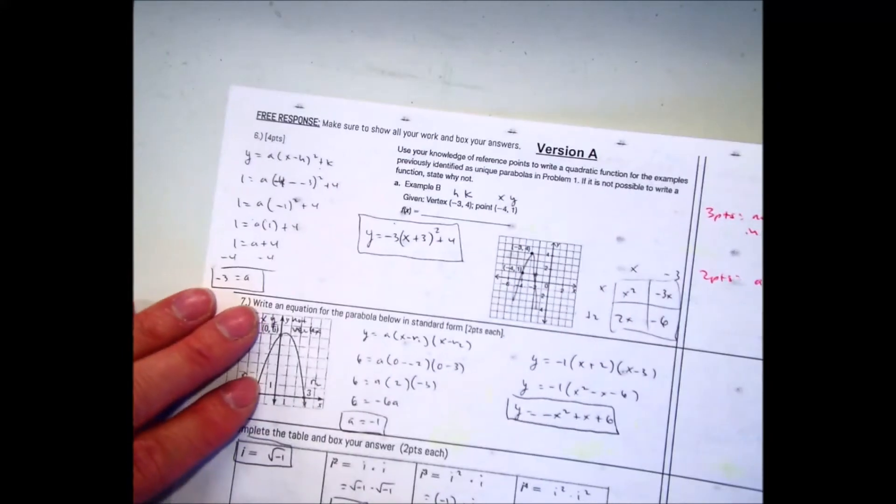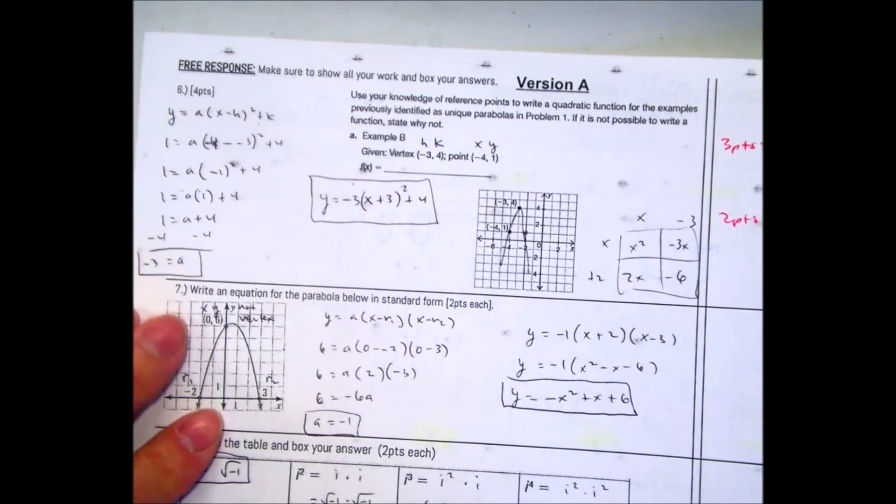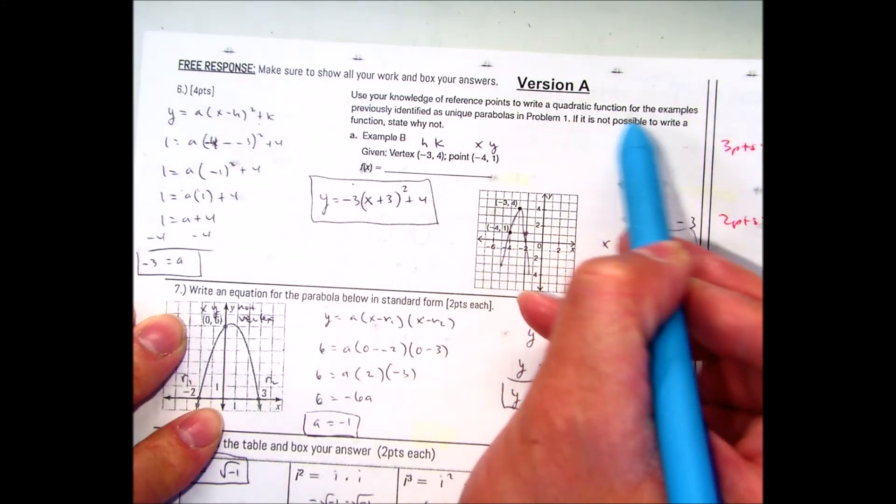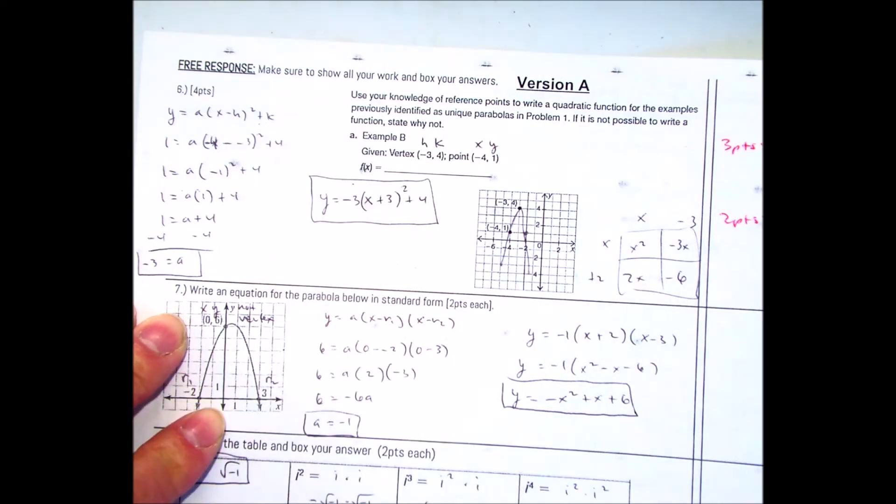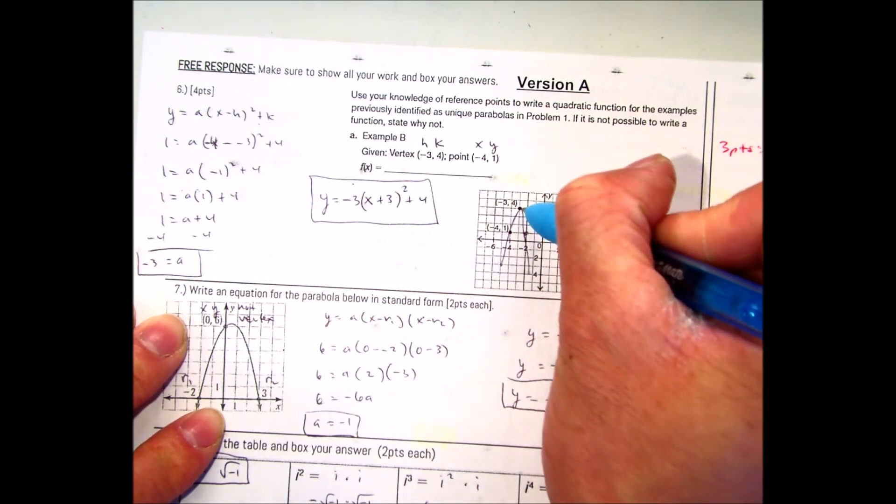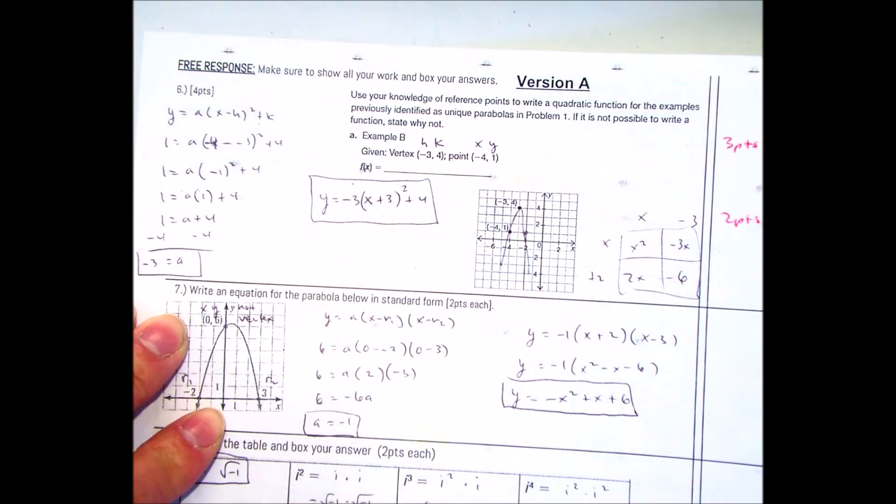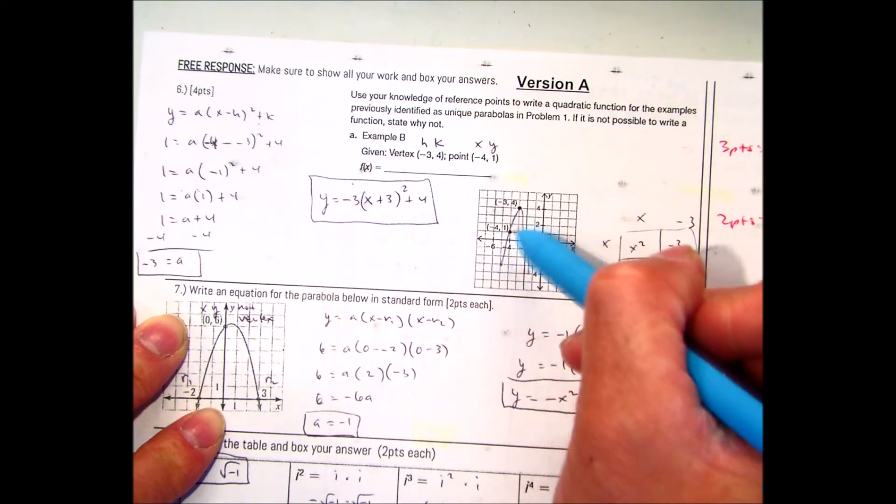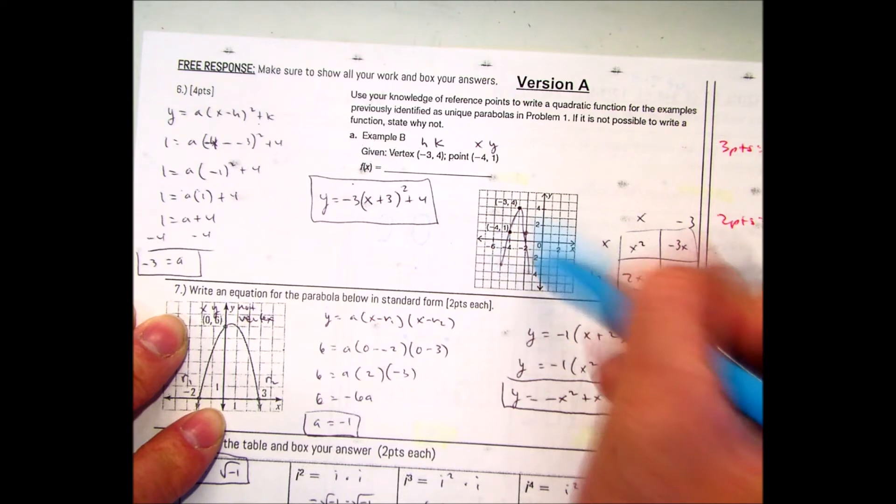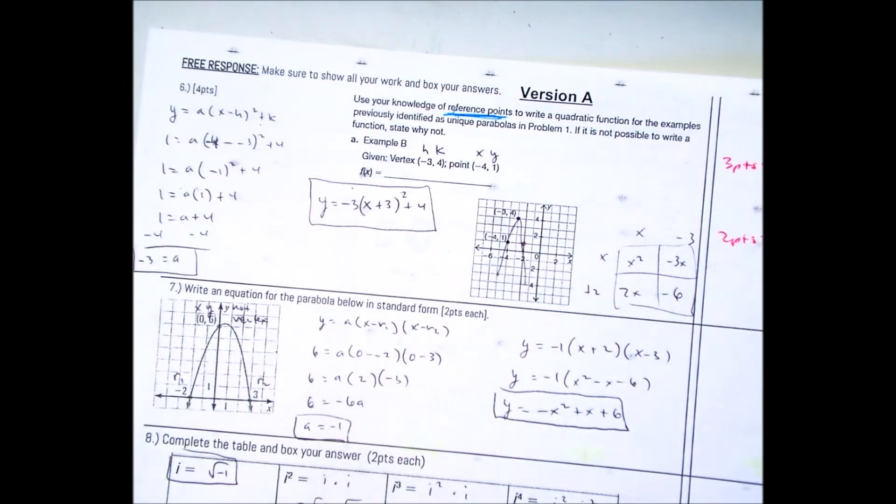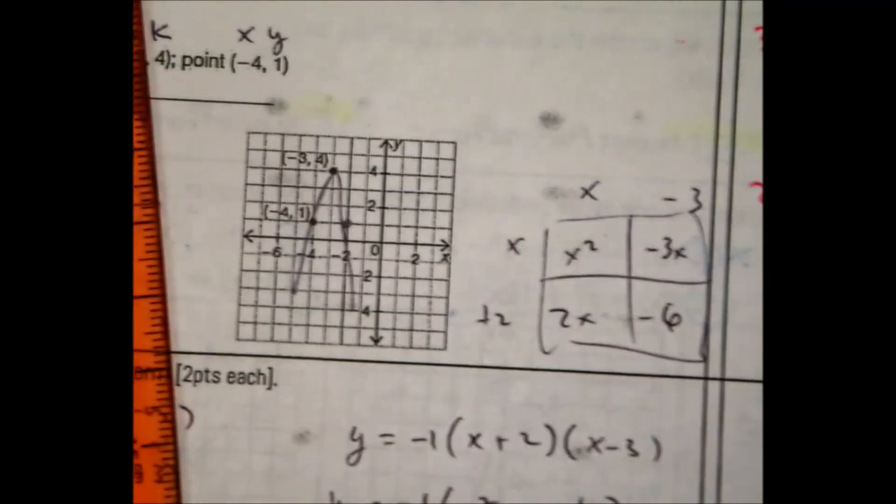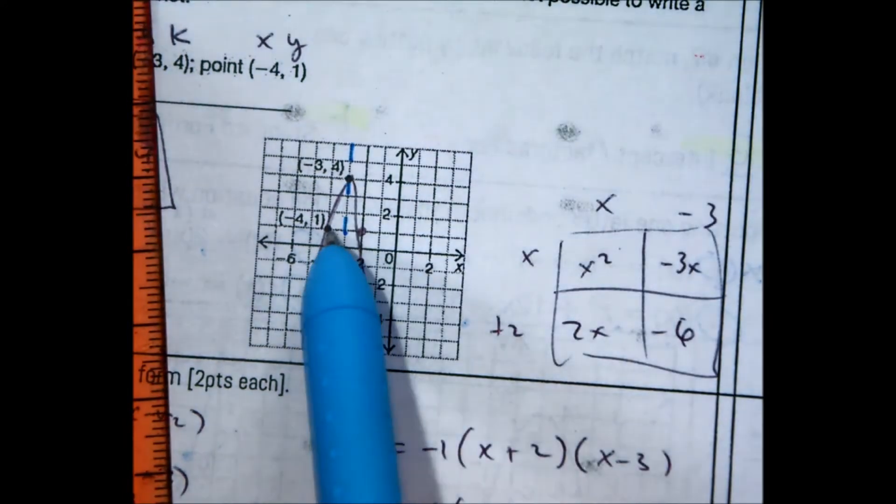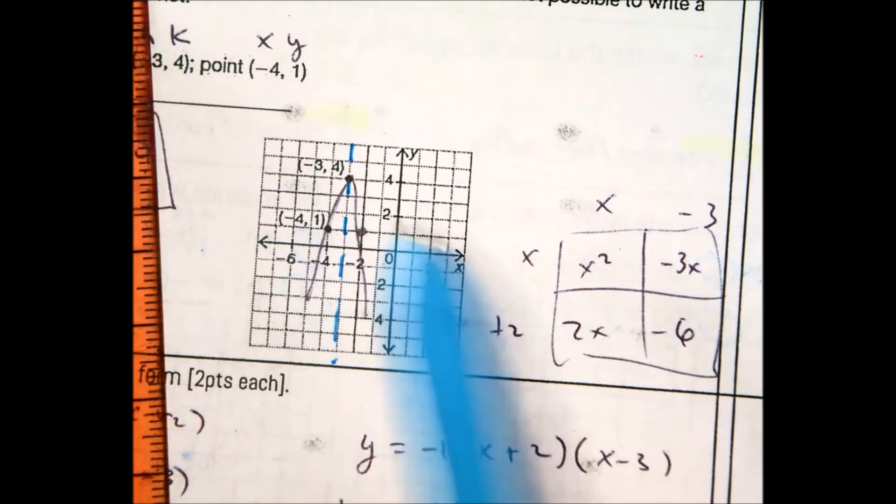Back side. Free response. Use your knowledge of reference points to write a quadratic equation for the examples. Previously identified as unique parabolas in problem 1. If it is possible, write a function state why or why not. Remember, I took this one directly from your packet. They gave me this point, negative 3, 4, and it tells me it's the vertex. So I know it's going to be either the highest or lowest point. Now I have a point, negative 4, 1, that's actually below the vertex, so I know it's going to open down. When I said use reference points, all I had to do was identify the axis of symmetry. And if I have this point here, negative 4, 1, it's one unit away from the axis of symmetry. I just count one past it and I have that point as well, if I needed it.